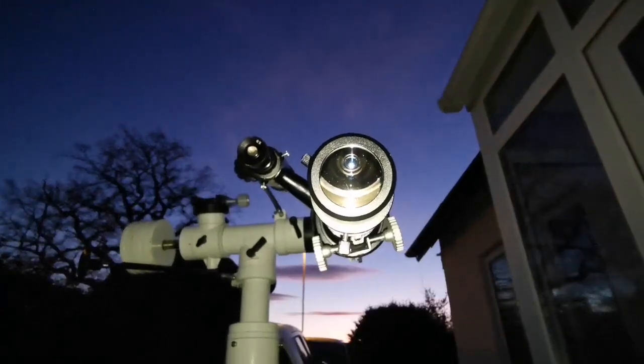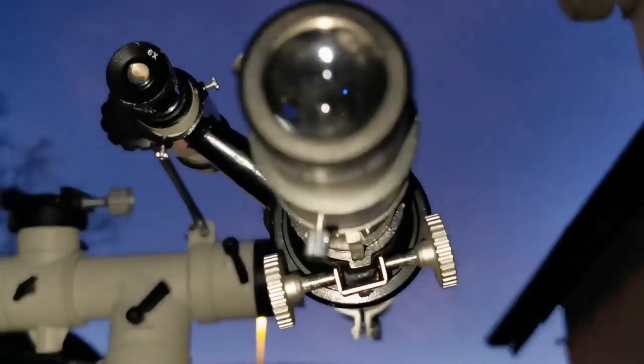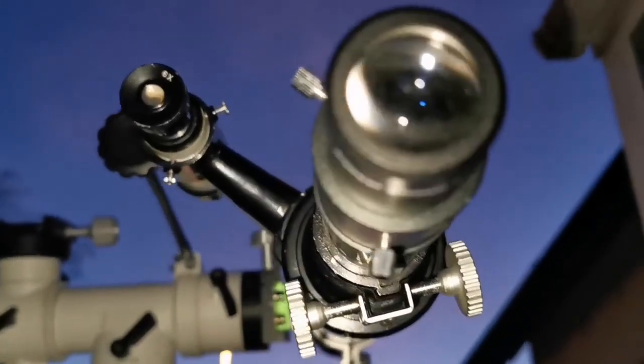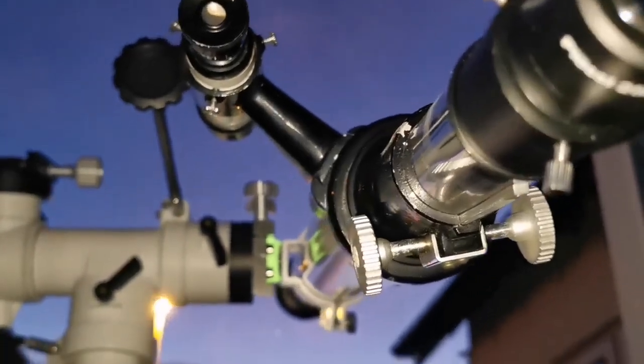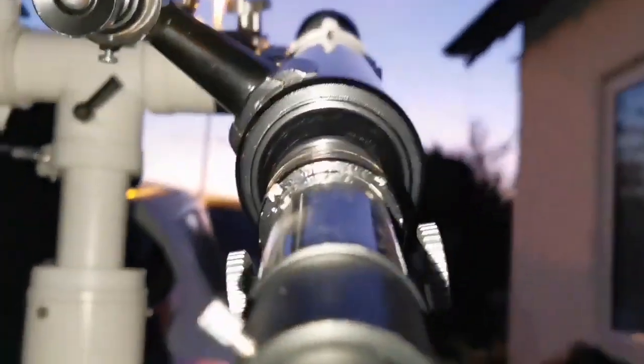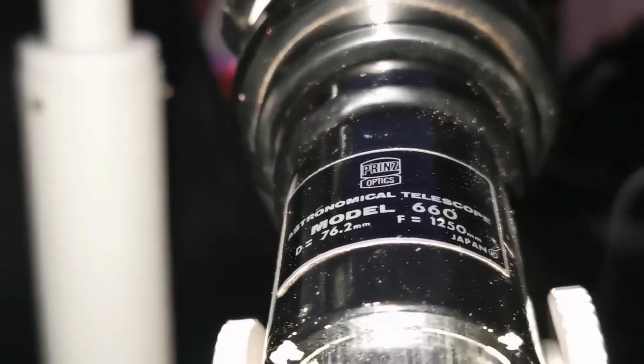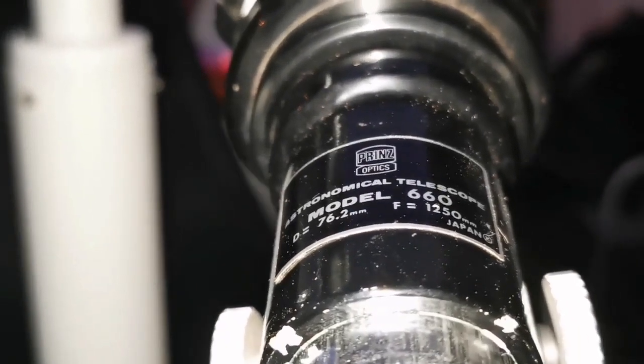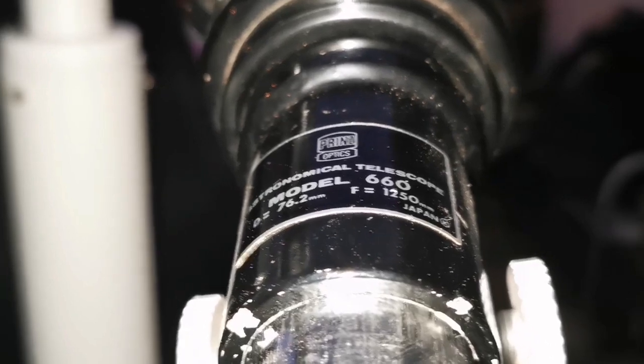Now I'm using a Prince Optic 76.2mm telescope. It has a focal length of 1250. It's a very long telescope and as you can see here, it gives you an F number around F 16.4. Let's see how is the view.